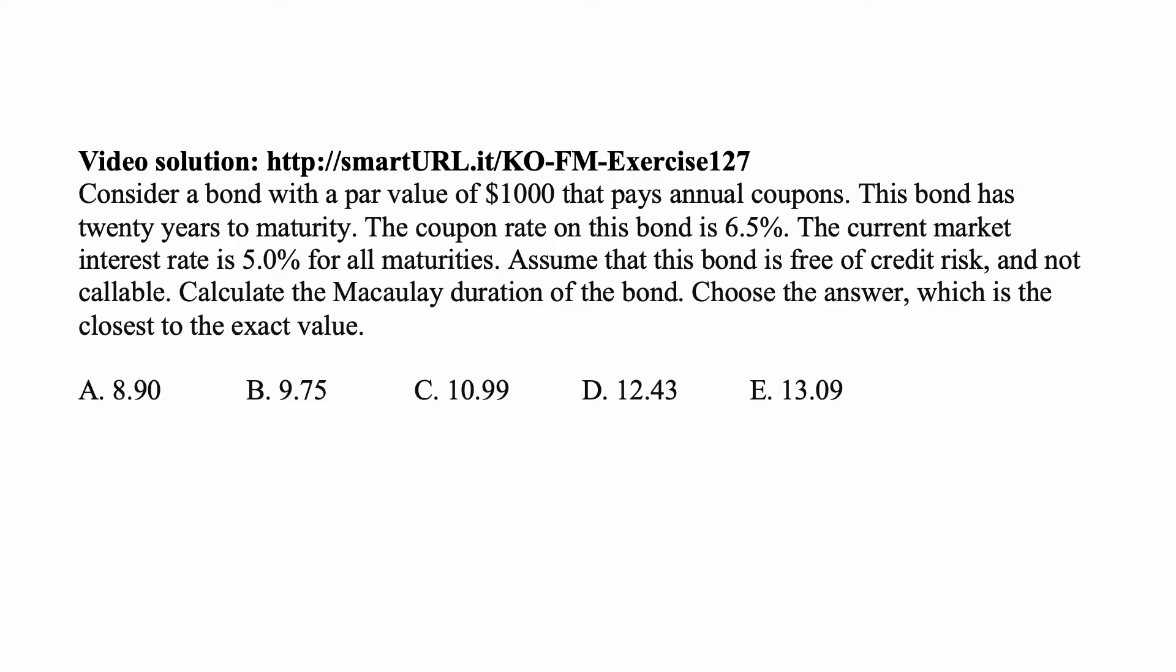Here's the problem for today for Exam FM on financial mathematics. Consider a bond with a par value of $1,000 that pays annual coupons. This bond has 20 years to maturity. The coupon rate on this bond is 6.5%. The current market interest rate is 5% for all maturities. Assume that this bond is free of credit risk and not callable. Calculate the Macaulay duration of the bond. Choose the answer which is closest to the exact value, and you have five choices.